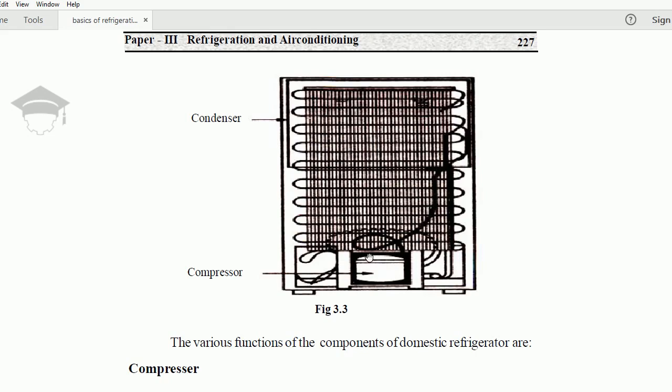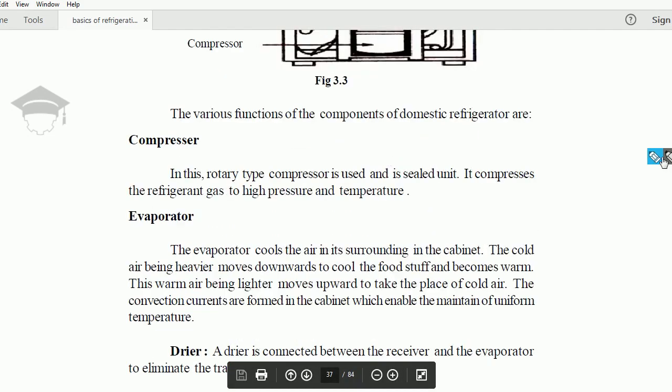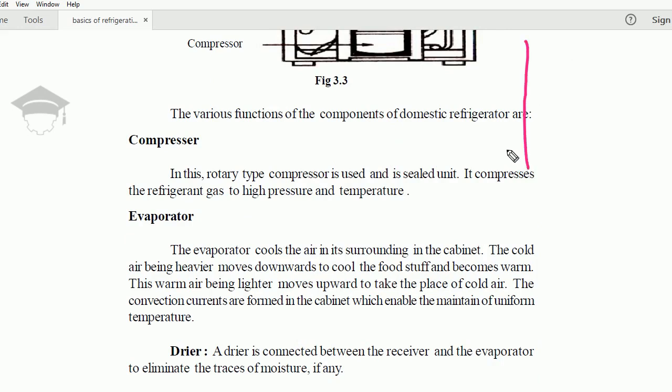Compressor function: generally we are using reciprocating or rotary type compressor. It compresses the refrigerant gas. We are using the general P-H chart. This is the compression process from 1 to 2 in the compressor. From 2 to 3, heat is rejected from the back side of the domestic refrigerator. From 3 to 4, it is expanded in the capillary. From 4 to 1, heat is absorbed in the evaporator. So this VCR cycle is applied here.